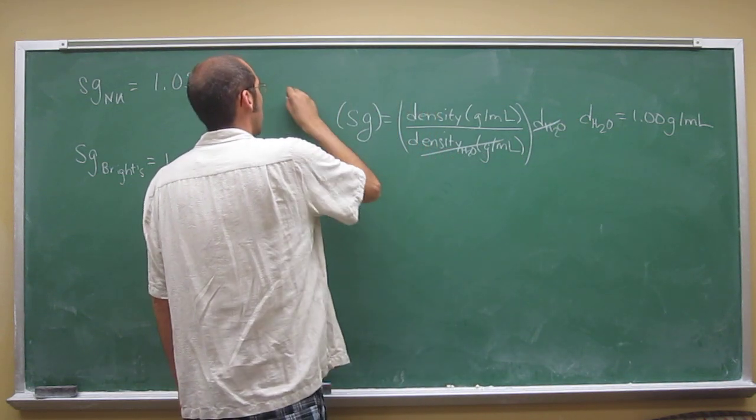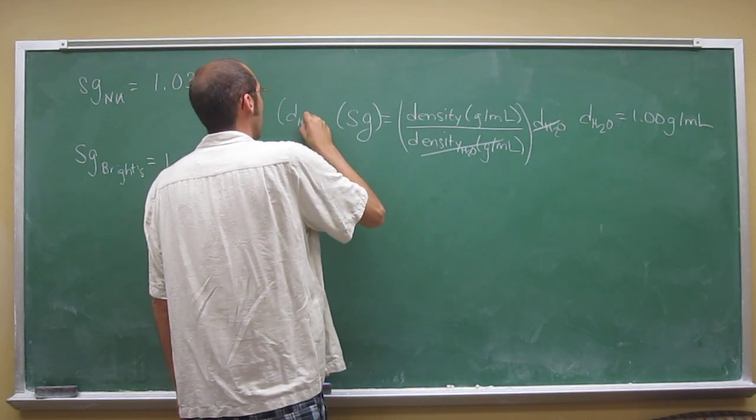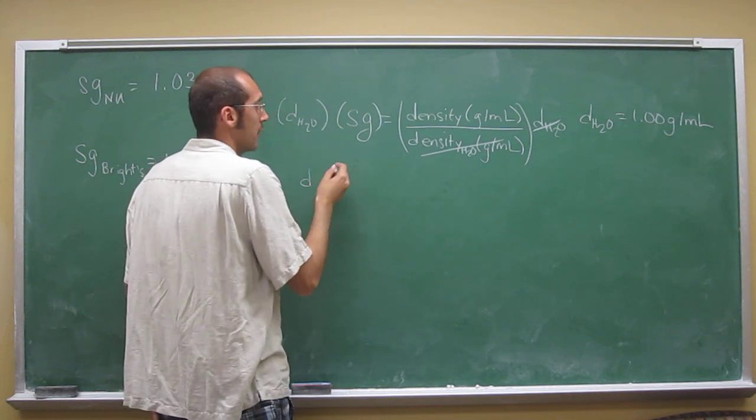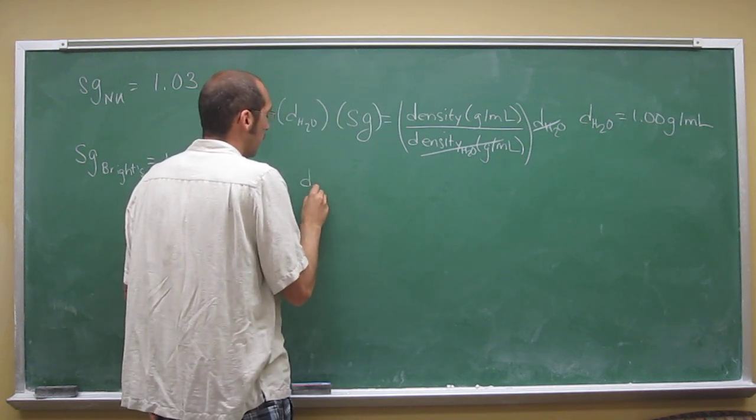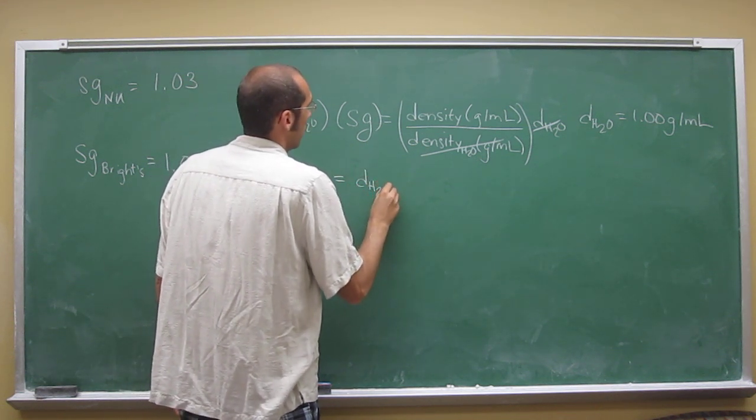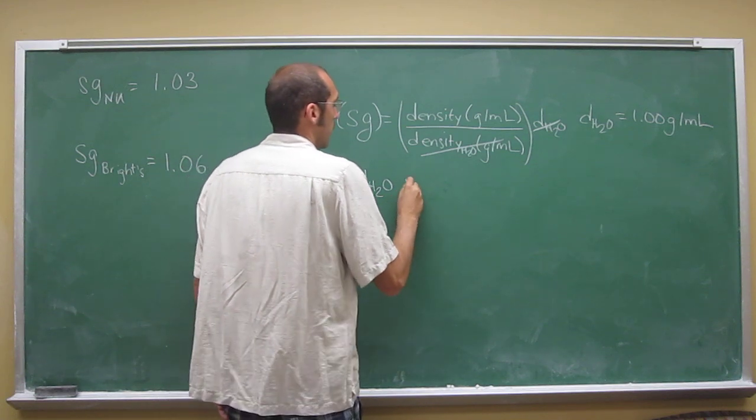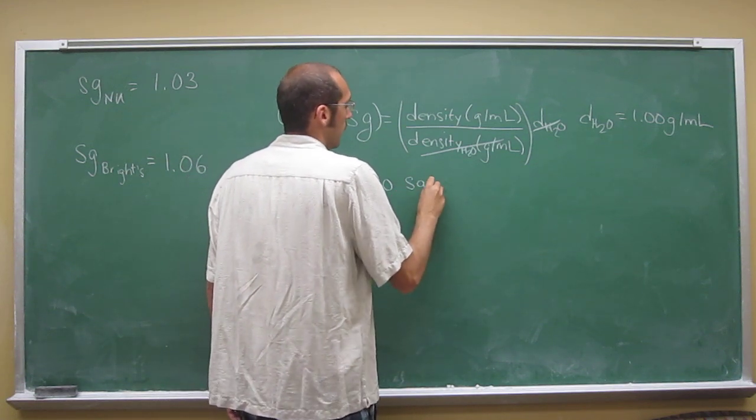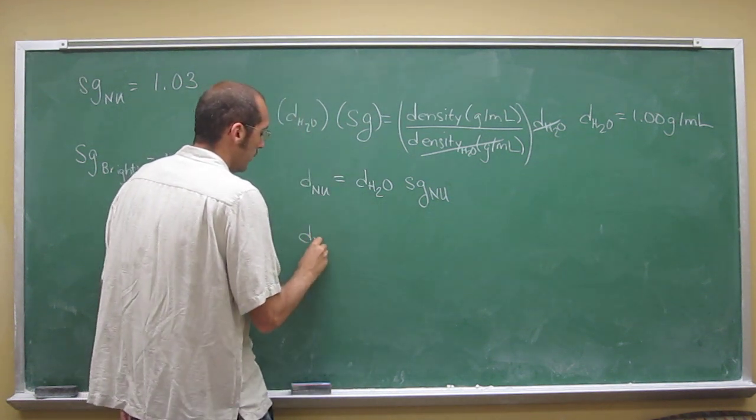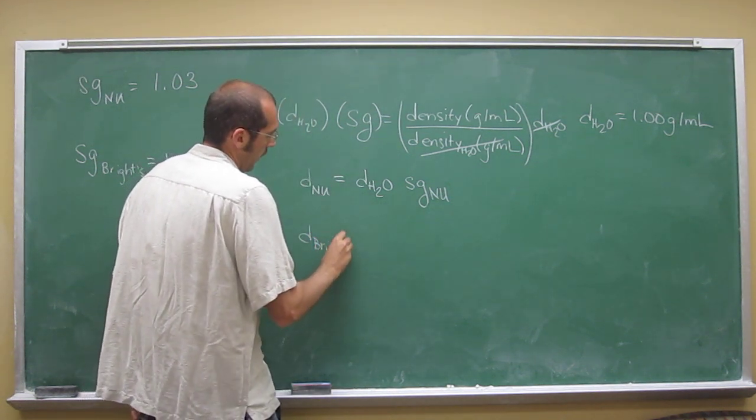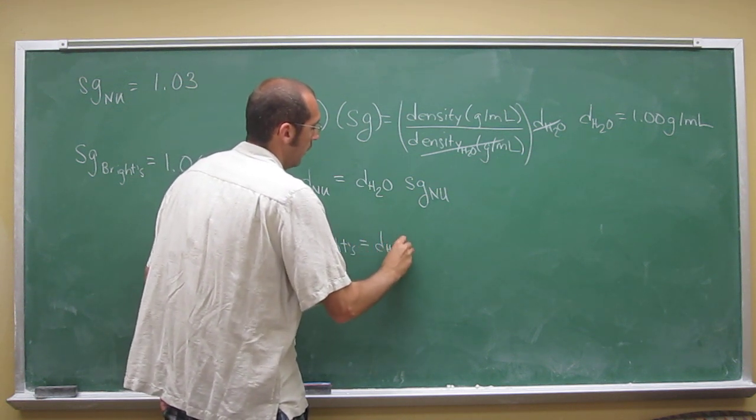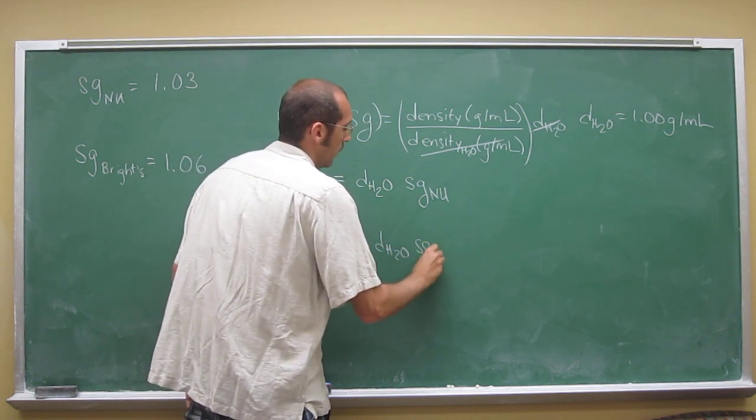So you've got the specific gravity times the density of water. The density of the normal urine is going to be the density of water times the specific gravity of the normal urine. And the density of Bright's is going to be the density of water times the specific gravity of Bright's.